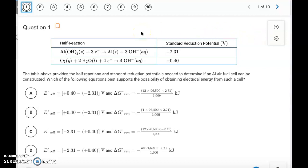Hello, this is the key for the 9.7 and 9.10 quiz on AP Classroom. Alright, so question one says, which of the following equations best supports the possibility of obtaining electrical energy from such a cell?